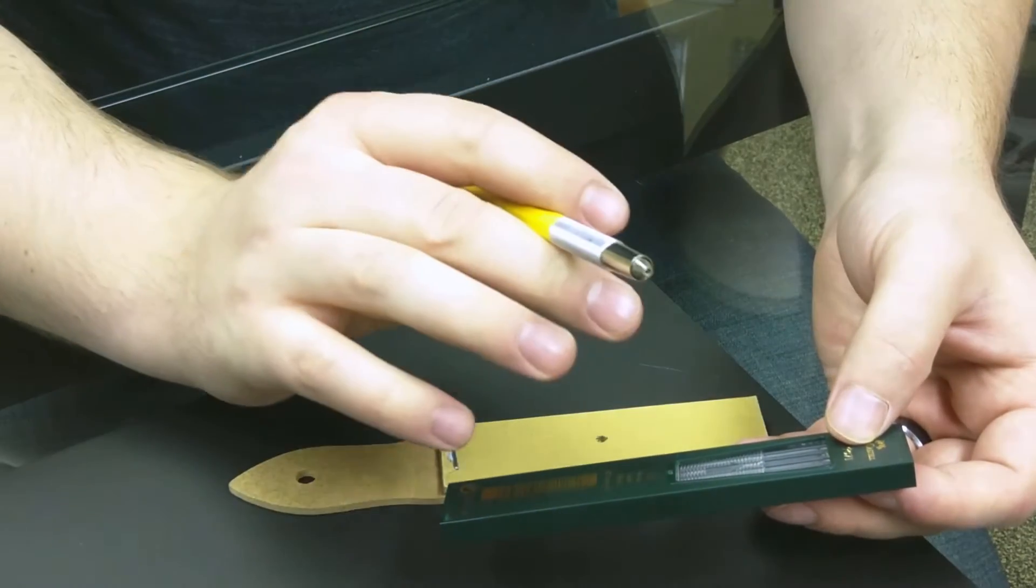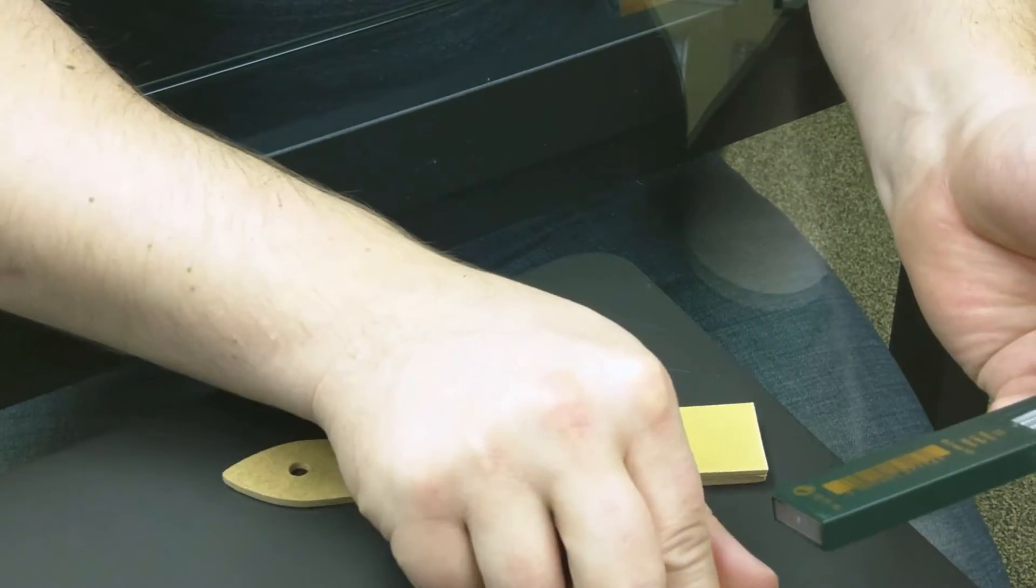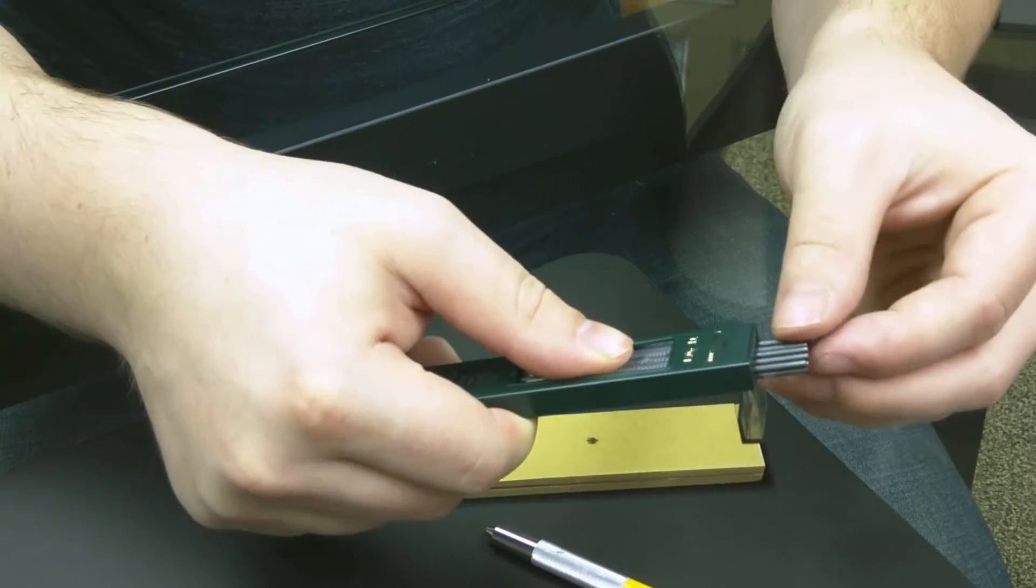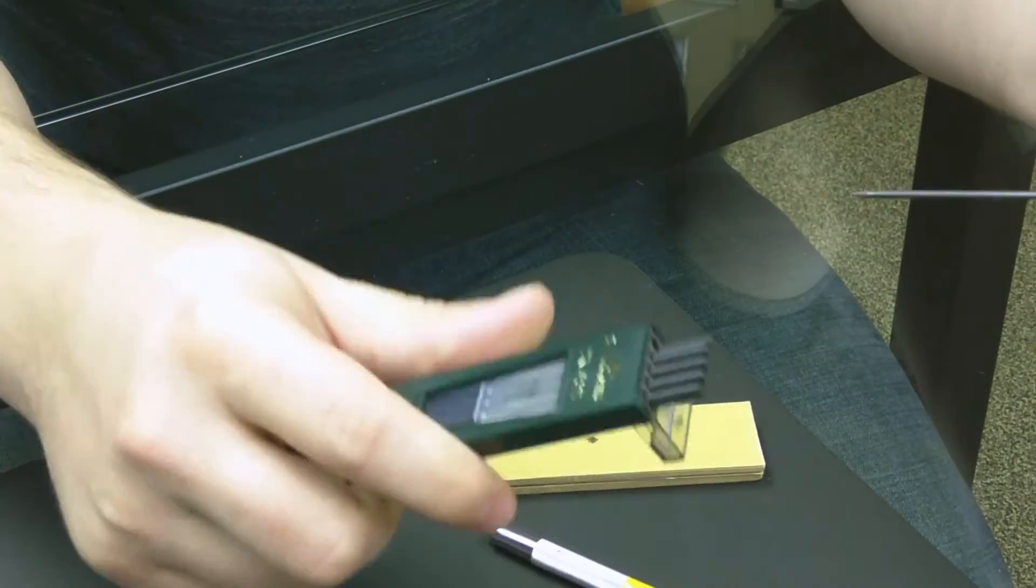The first step to any successful scratch test is to prepare the pencil to be used for testing. The 3086 utilizes mechanical pencil lead as opposed to the traditional method.